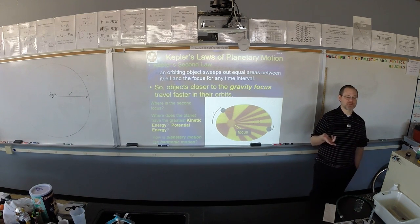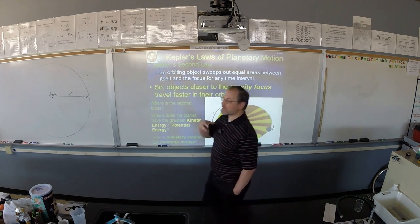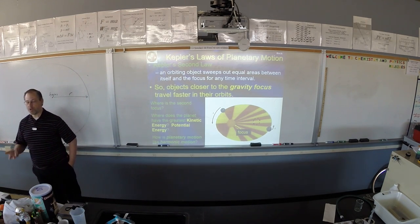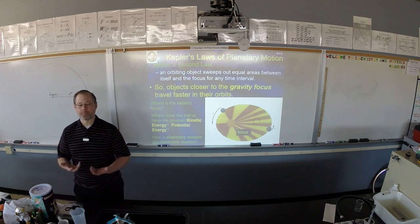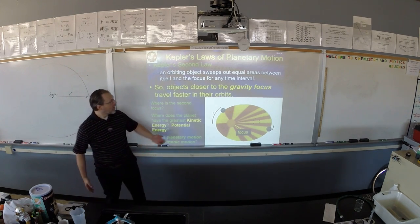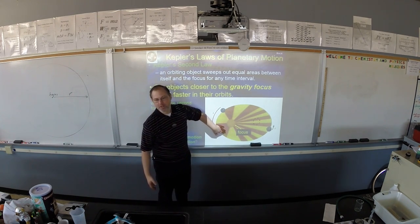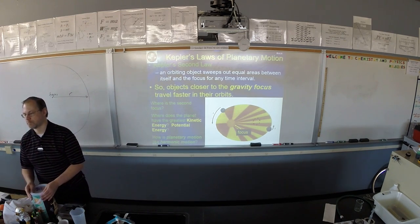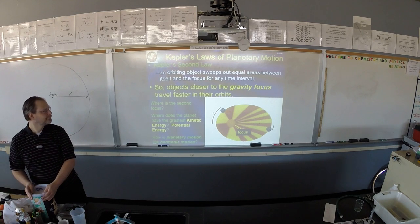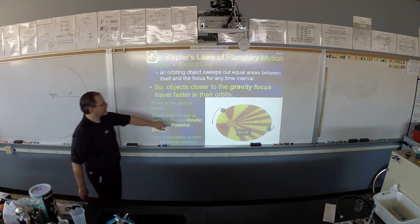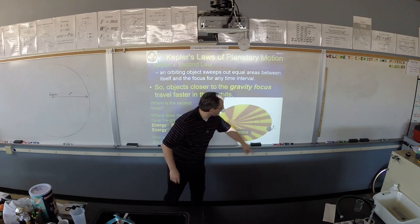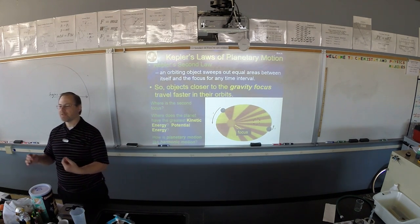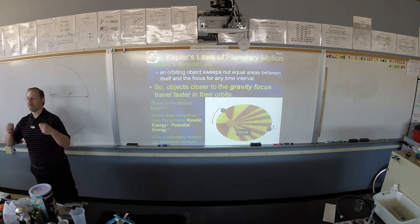That's important because that means objects closer to their focus have to be going faster. And this is what the AP is actually, this is what we've actually found in AP tests. This actually pops up. They want you to know the what of Kepler's second law. And that is, objects traveling towards the focus are traveling faster. Same size T. So this T and this T are the same amount of time. So for any given amount of time, when the planet is closer to the focus, it has to be going faster.